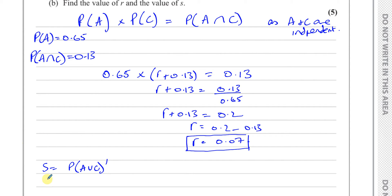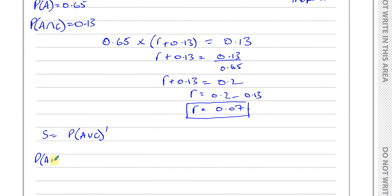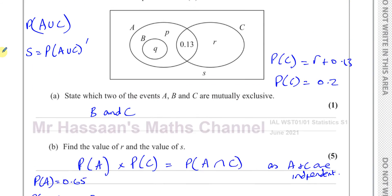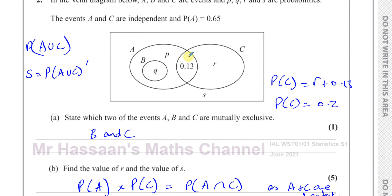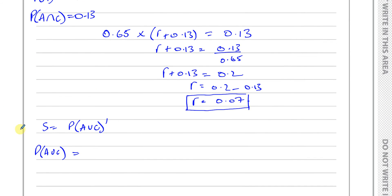The probability of A ∪ C is equal to P(A) plus the part of C outside A, which is R. So P(A ∪ C) = 0.65 + 0.07 = 0.72.